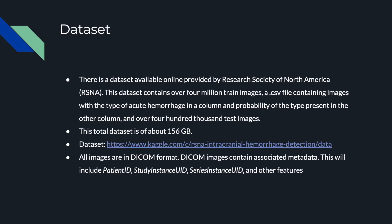A dataset is available online provided by the Radiological Society of North America (RSNA). This dataset contains over 4 million training images, a CSV file containing image IDs with the type of acute hemorrhage in one column and the probability of the type in another column, and over 400,000 test images. The total dataset is approximately 156 GB.